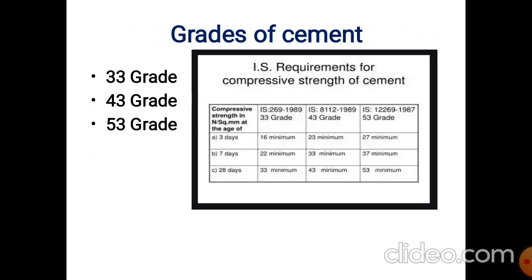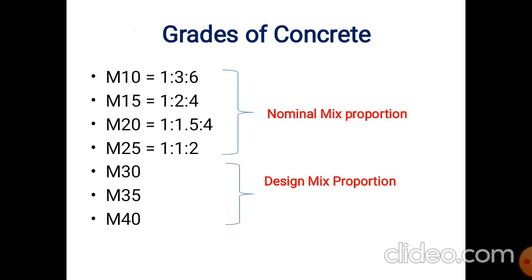This is the concrete grade. You can use M10 to M55. We use M10 to M25 as the normal mix proportion. For example, 1:3:6 means 1 part cement, 3 parts fine aggregate, 6 parts coarse aggregate. We use M30 to M40 with a mix design approach.